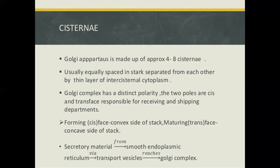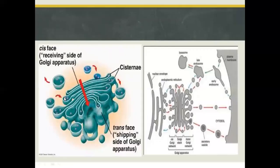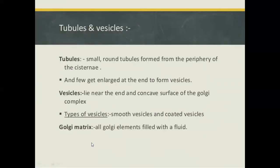The Golgi complex has a distinct polarity with two poles: the cis-Golgi network (CGN) and the trans-Golgi network (TGN), responsible for receiving and shipping departments respectively. The cis-face is the convex side of the stack receiving material from the smooth endoplasmic reticulum, while the trans-face is the concave side of the stack. Tubules are small round structures that form from the periphery of the cisternae and enlarge at the end to form vesicles. Vesicles lie near the end and concave surface of the Golgi complex.